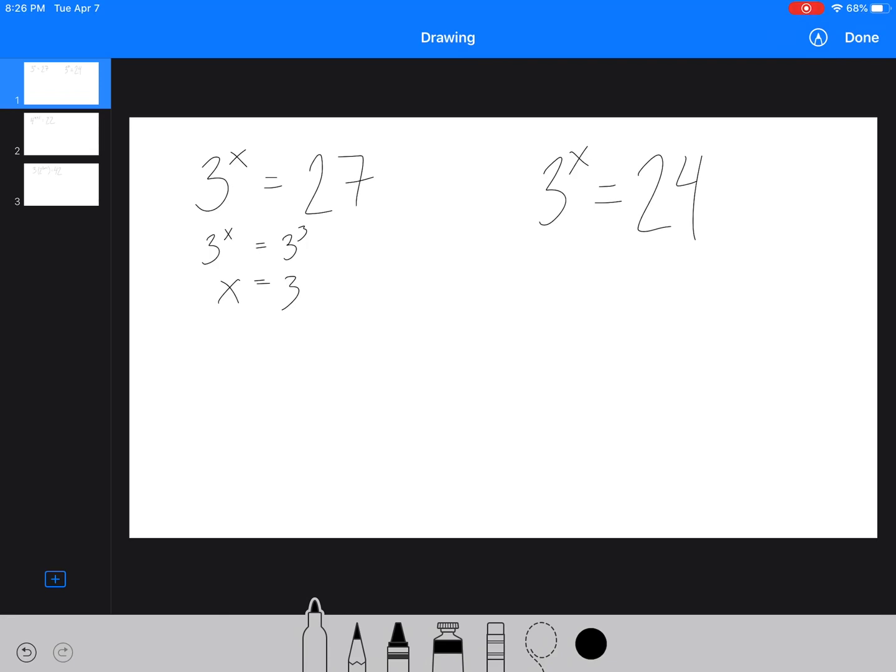But what about cases like 3 to the x equals 24, where you can't really get an exact number? What we'd actually have to do is we would have to narrow it down.